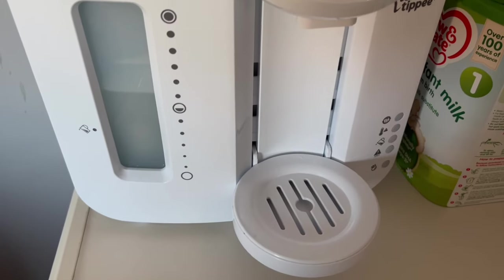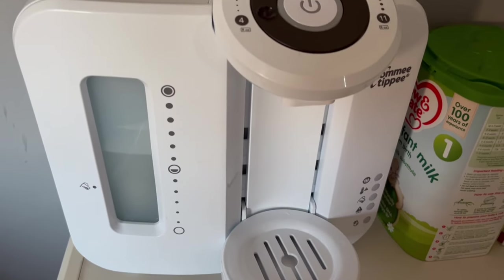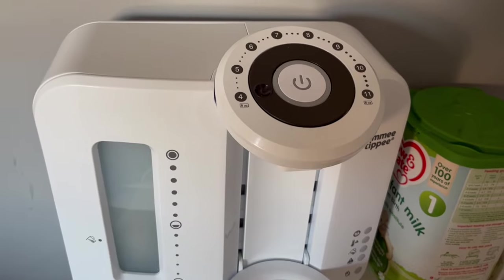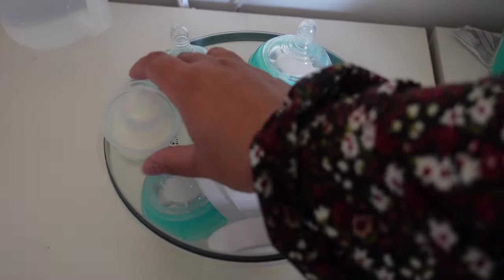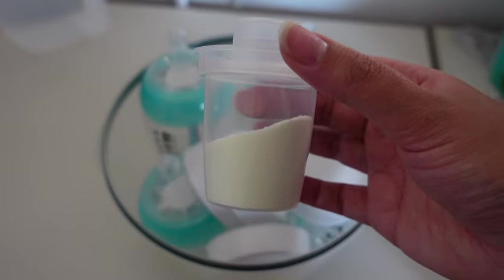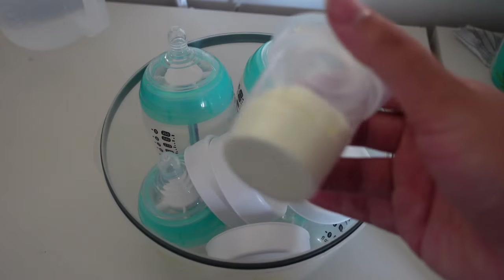At night we like to use his Tommy Tippee prep machine to make up his formula. I have brought up his tub of powder and also brought up four bottles, a powder pot dispenser which I have put in enough powder for one bottle.